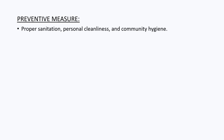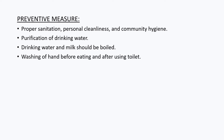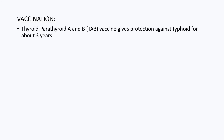There are measures that can be taken to prevent typhoid. People should follow proper sanitation, personal cleanliness, and community hygiene. Purification of drinking water should be done. Drinking water and milk should be boiled before consuming. Washing of hands is prescribed before eating and after using the toilet. Also, chronic carriers of typhoid should be prevented from working in food-handling roles. Vaccination is also a preventive measure. The TAB vaccine gives protection against typhoid for about three years.